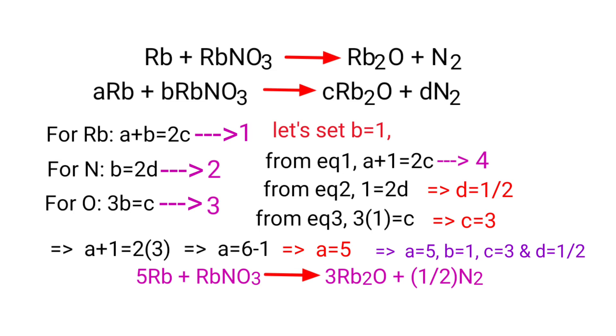Multiply the equation by 2 to get whole numbers: 10Rb + 2RbNO₃ gives 6Rb₂O + N₂.